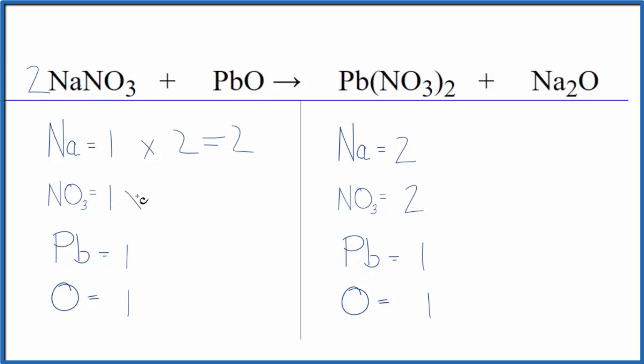This equation is balanced. So you can see it's really helpful if you have a polyatomic ion like the nitrate ion here and then here again - just count it as one thing. You'll get the same answer either way, just a lot quicker.